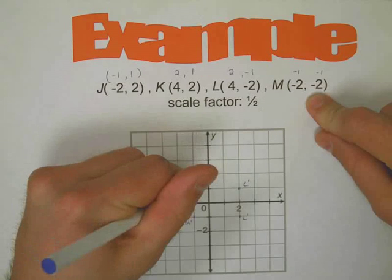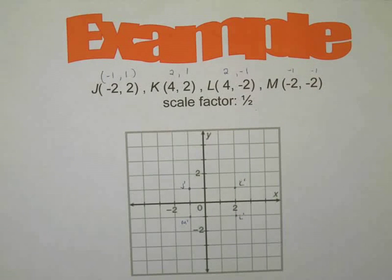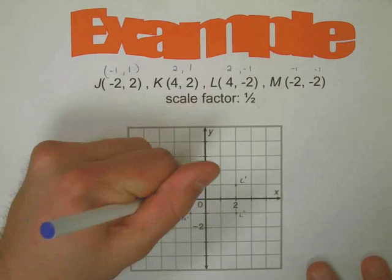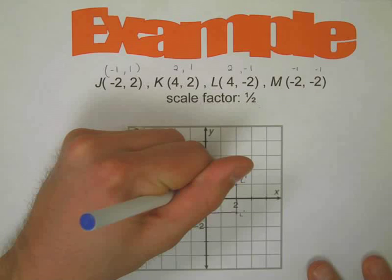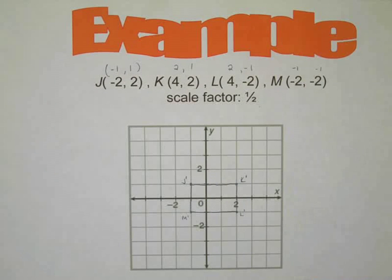There's L prime. And M was at negative two, negative two, so now it's at negative one, negative one. There's M prime. I mean those are the four things. Obviously it's probably trying to get you to draw a rectangle here. Probably should have said something about quadrilateral JKLM or something along those lines, but the idea is pretty straightforward.